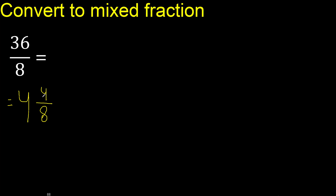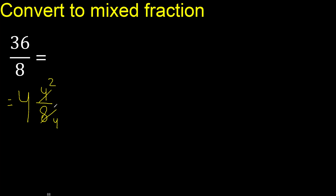4 is the remainder. This can be simplified because it can be divided by the same number — divided by 2. 4 divided by 2 is 2, and 8 divided by 2 is 4.